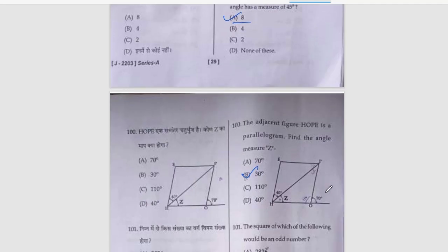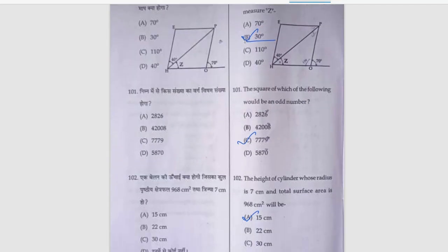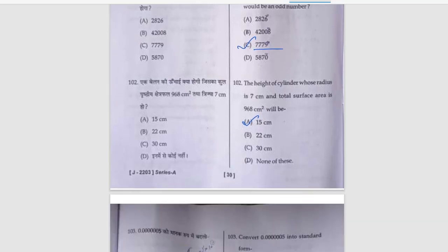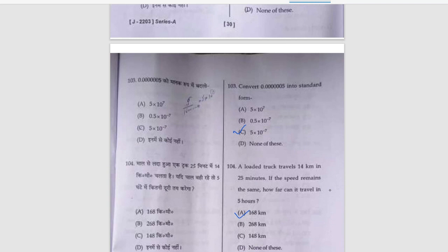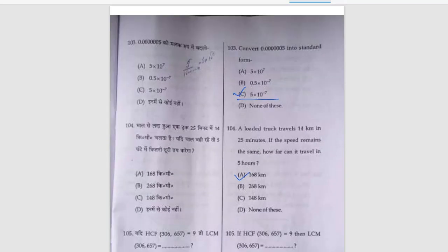Next is adjacent figure HOPE is a parallelogram, find the angle Z, that is 30 degrees. Square of which of the following numbers would be odd? That is 7779, option C. The height of cylinder whose radius is 7 and total surface area, that is 15 cm. Next is convert into standard form, that is option number C, 5 into 10 raised to power minus 7.